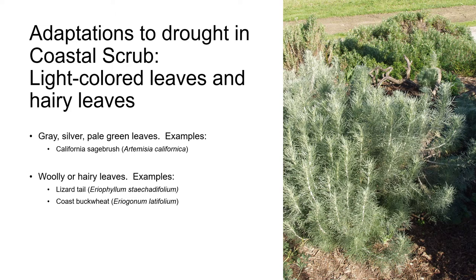Like Chaparral, vegetation in Coastal Scrub has evolved adaptations to drought to survive the long dry summer of California's Mediterranean-type climate. Plant leaves are often gray or light-colored, which reflects sunlight and reduces water loss by preventing leaves from becoming too hot. The leaves of some plants are hairy, which reduces wind speed over the leaf surfaces and traps moisture, again reducing water loss.